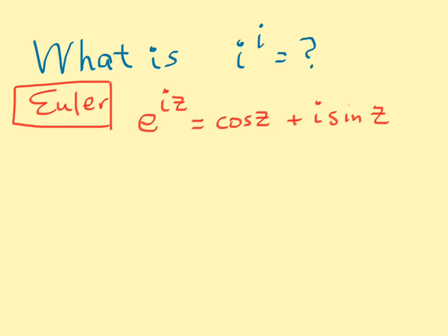Euler's formula tells us that e to the exponent iz is equal to cos of z plus i sine of z.